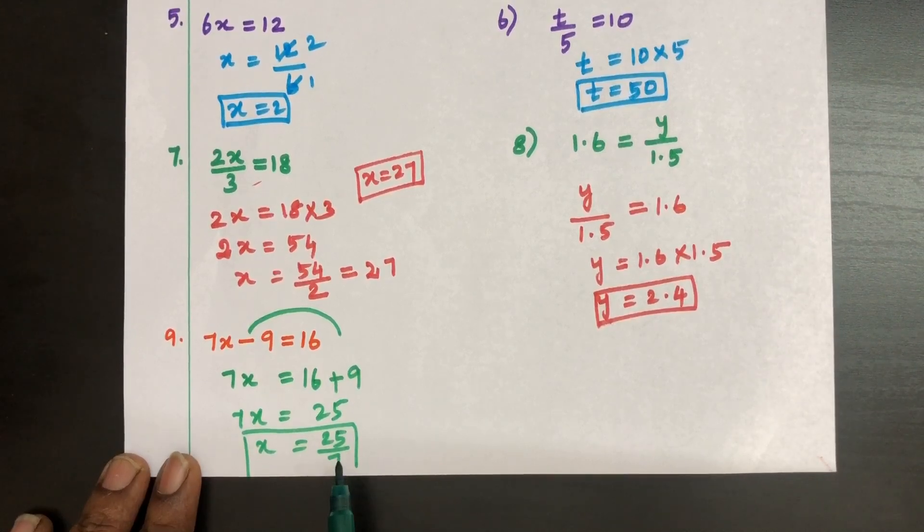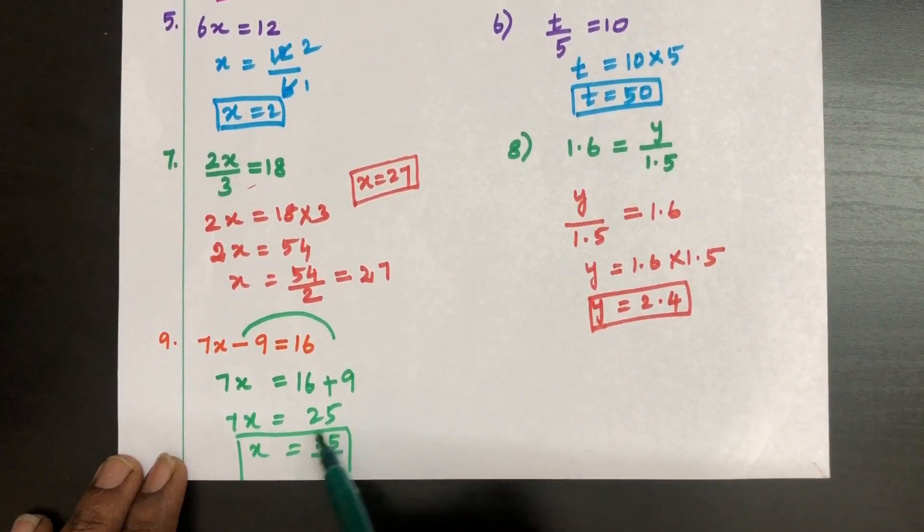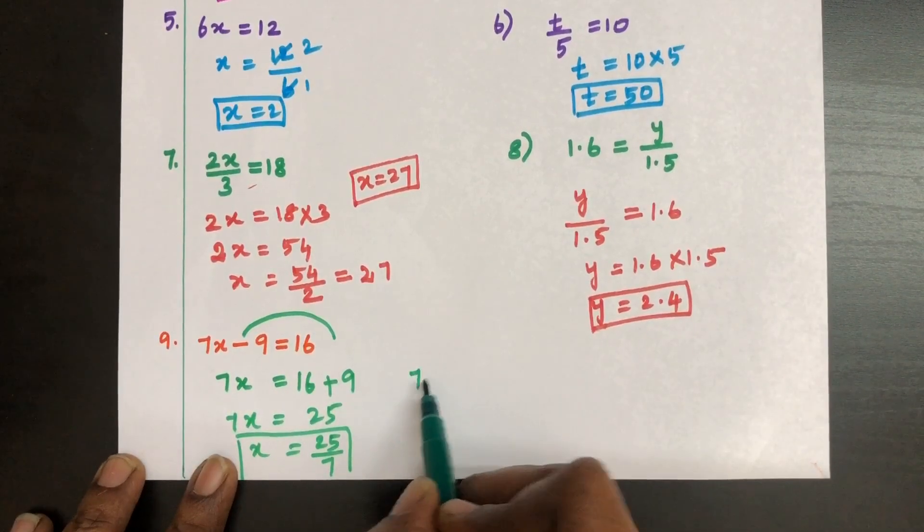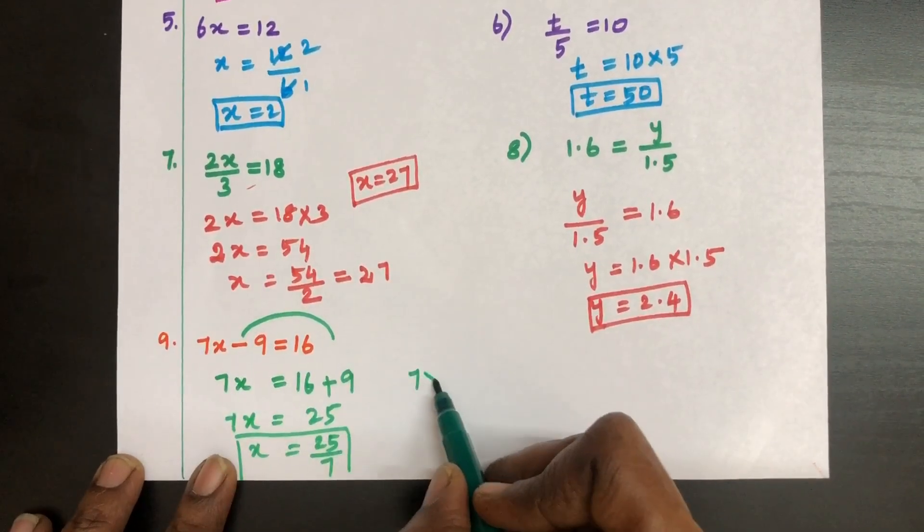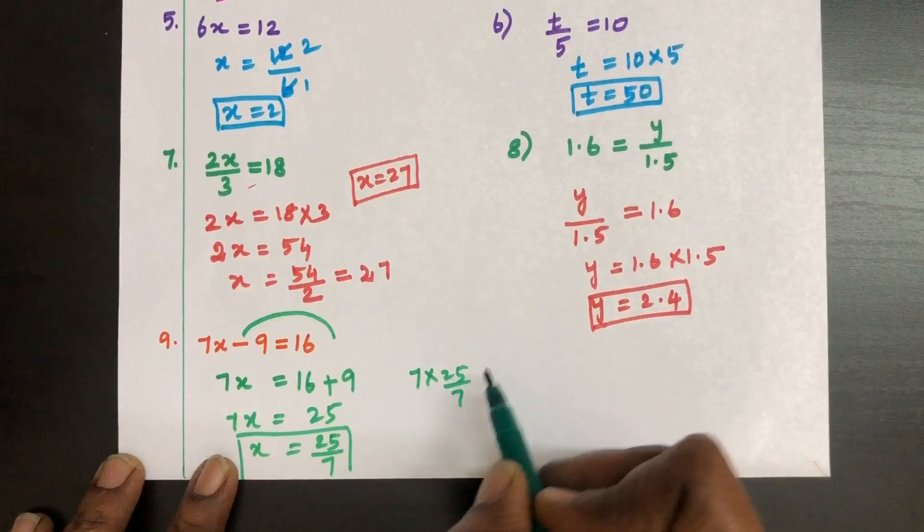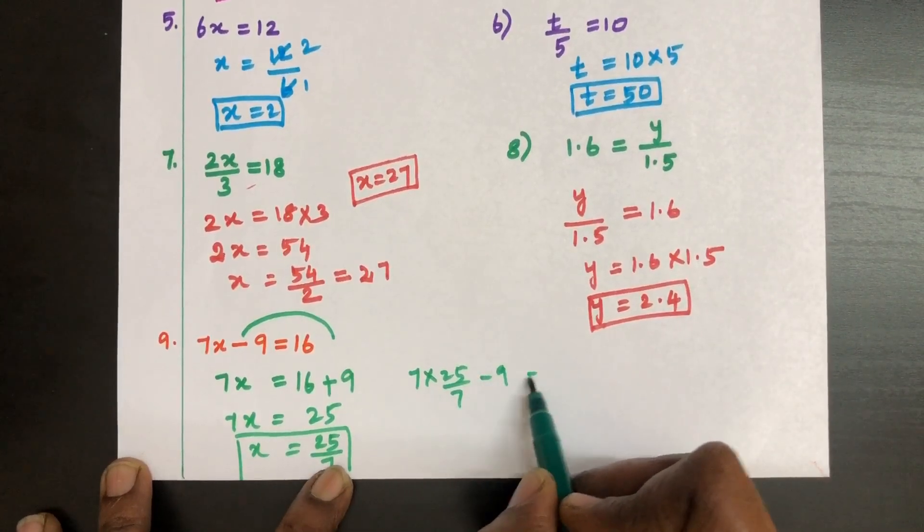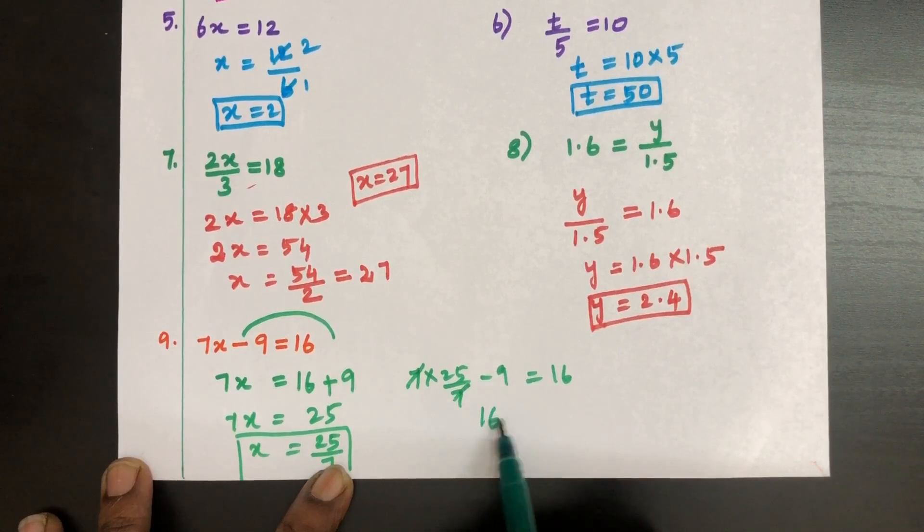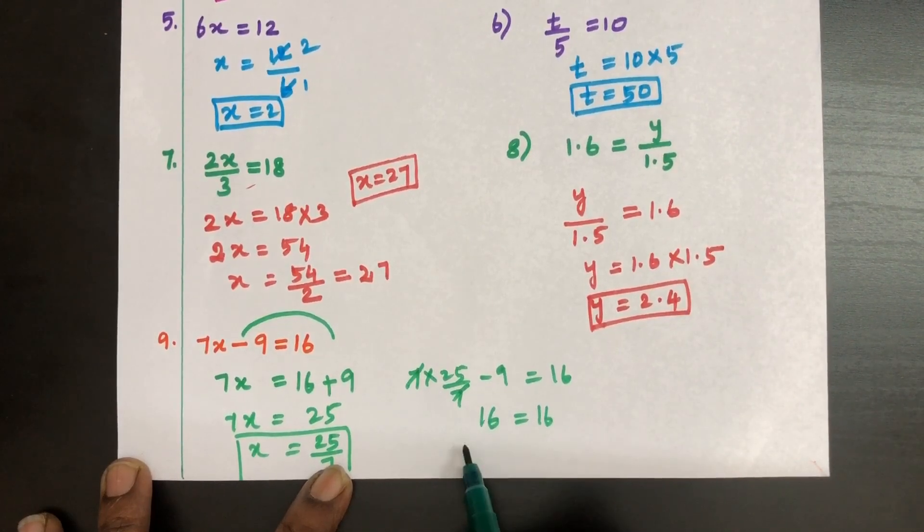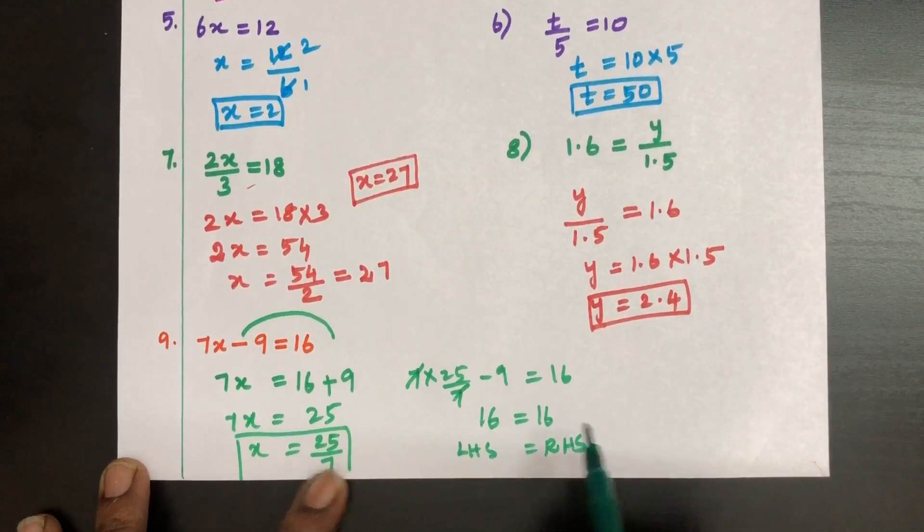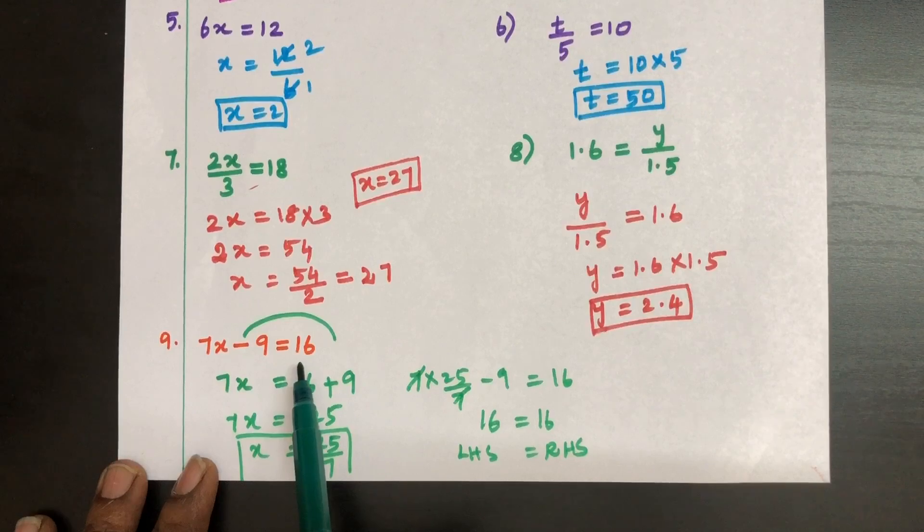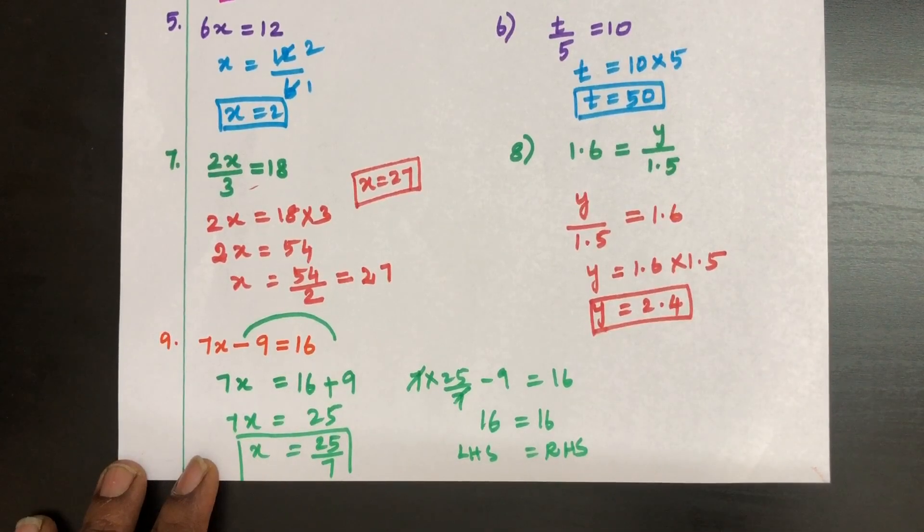If you want to check whether this is right or wrong just substitute the value of X in this equation. See here 7, instead of X just give 25 by 7, minus 9 equal to 16. If we cancel this becomes 25 minus 9. 25 minus 9 is 16. 16 equal to 16. LHS equal to RHS. Thus proved. Both sides are equal. So X equal to 25 by 7 is the solution of the given equation or root of the given equation.